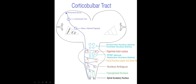Here's the corticobulbar tract - how the cortex talks to all of the lower motor neurons in the brainstem. For ALS, it mainly affects nucleus ambiguus (motor for CN 9 and 10) and the hypoglossal nucleus. If the problem starts with the corticobulbar tract, the patient will have pseudobulbar palsy. If degeneration starts in the nucleus ambiguus and hypoglossal nucleus - more of a lower motor neuron presentation - that's called bulbar palsy.